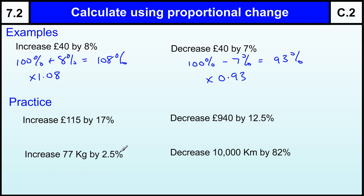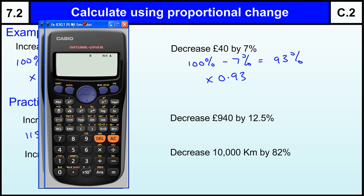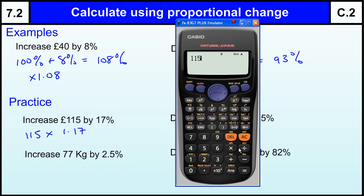Okay, increasing £115 by 17%, so if I'm increasing I'm adding 17% to 100 to make 117, and then I'm timesing by 1.17. There's the 17%, there's the 100%, times by 1.17. Time for a calculator: 115 times 1.17 and we get £134.55.